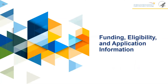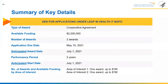Key funding, eligibility, and application details: the type of award is a cooperative agreement. Available funding is $2 million total, with two awards of $1 million each. The application due date is May 10, 2021. The anticipated award date is July 1, 2021. The performance period is two years with an anticipated start date of July 1, 2021. The number of awards and available funding will be determined by each area of interest and available funding for this year.